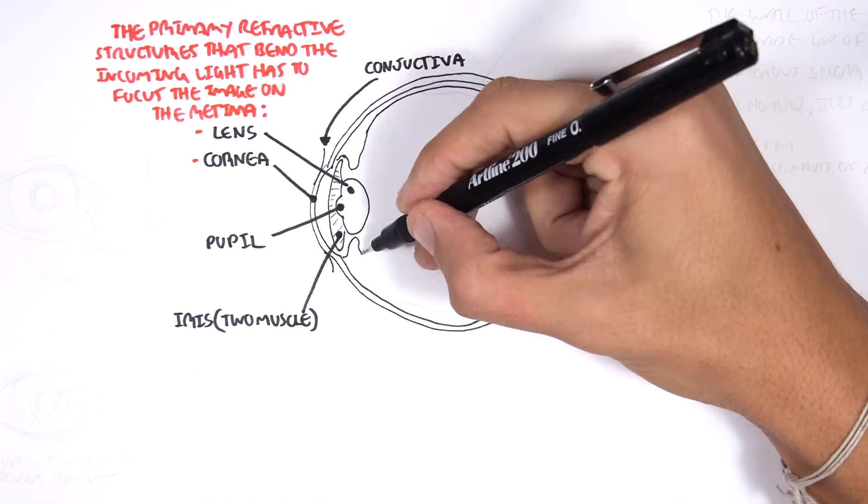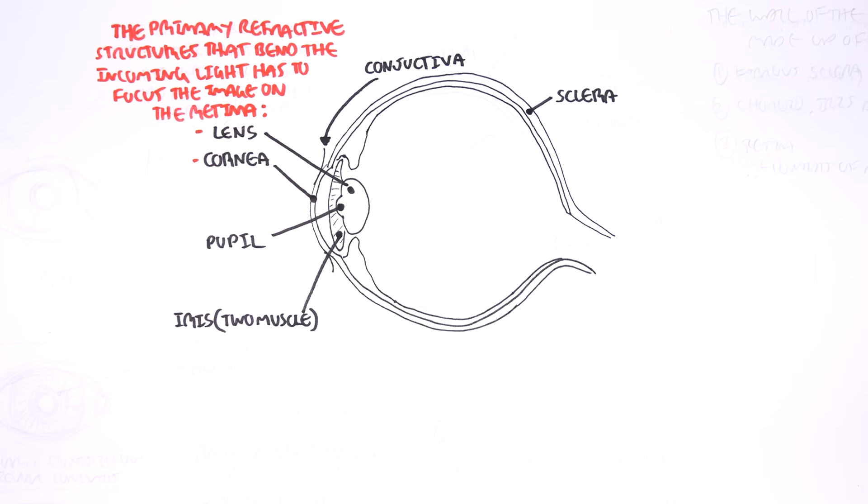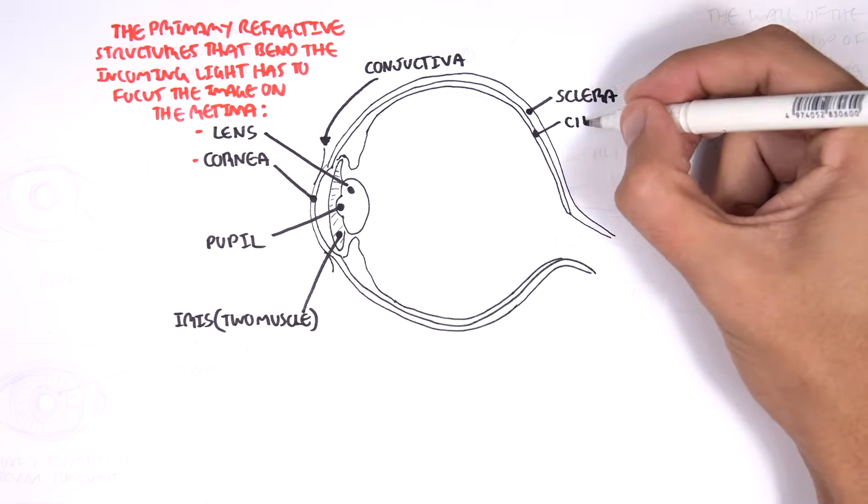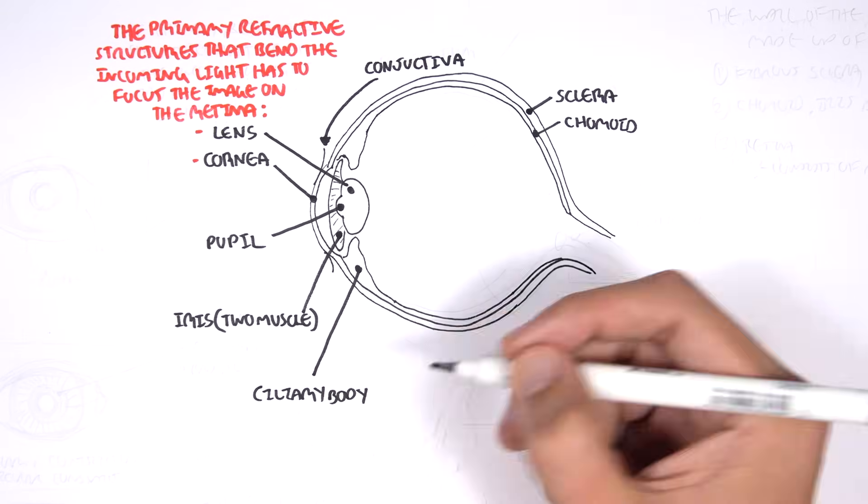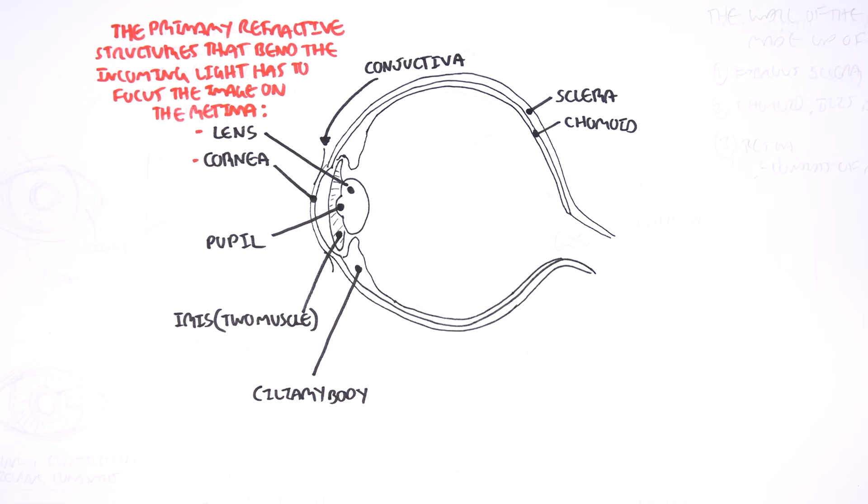So the layers of the eye on the posterior aspect, from the outside we have the sclera, then the choroid. Within the same layer of the choroid are the ciliary bodies. The choroid, ciliary bodies and iris make up what is known as the uvea.